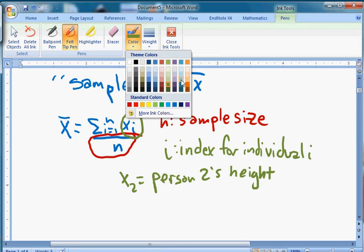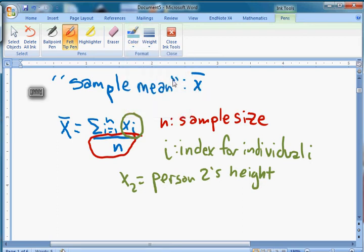Okay, now last but not least, we have this thing right here. Okay, this is called a summation symbol. So this right here, this is a big sigma. It's a Greek letter and it's a summation symbol.